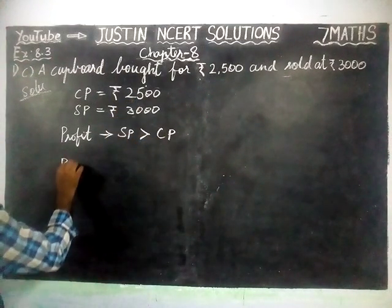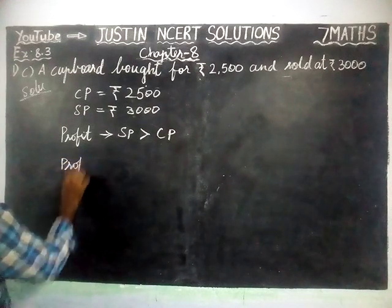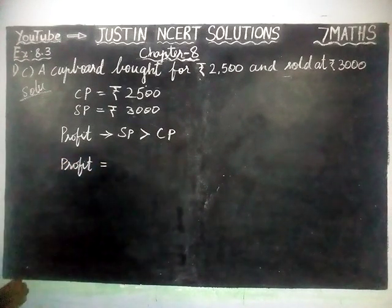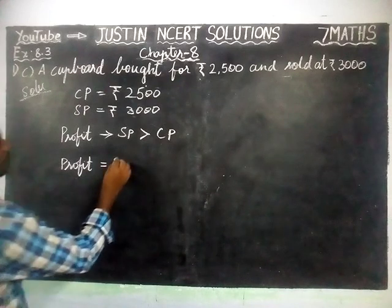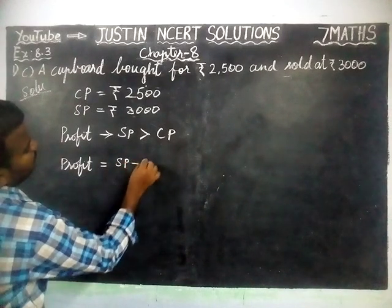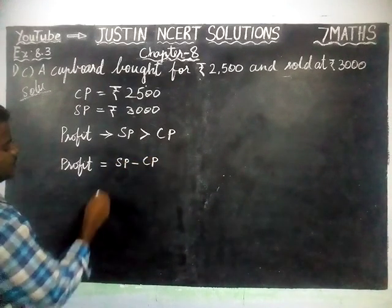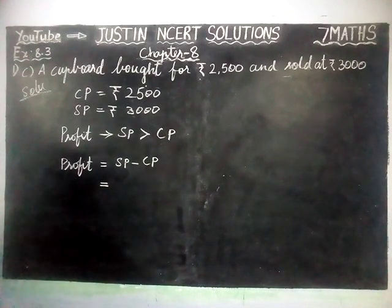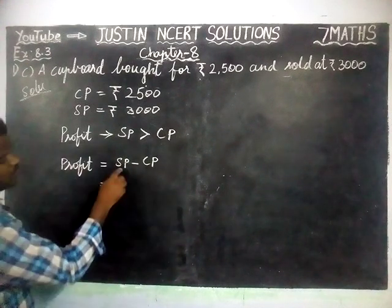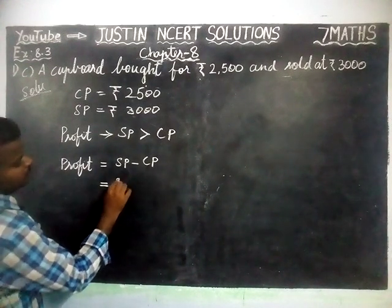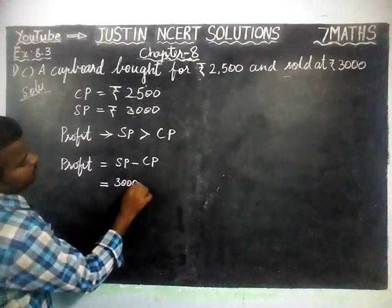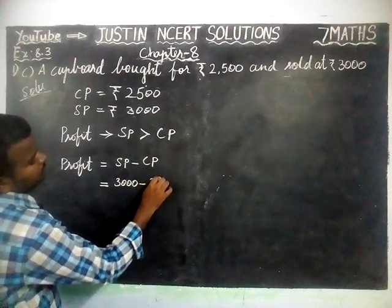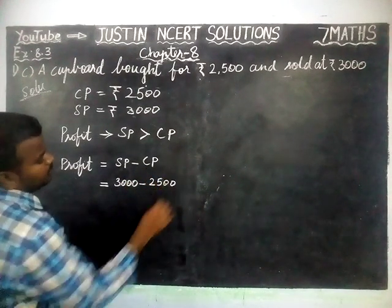Now, we are going to find profit. Profit is equal to sale price minus cost price, which is equal to 3000 minus 2500.